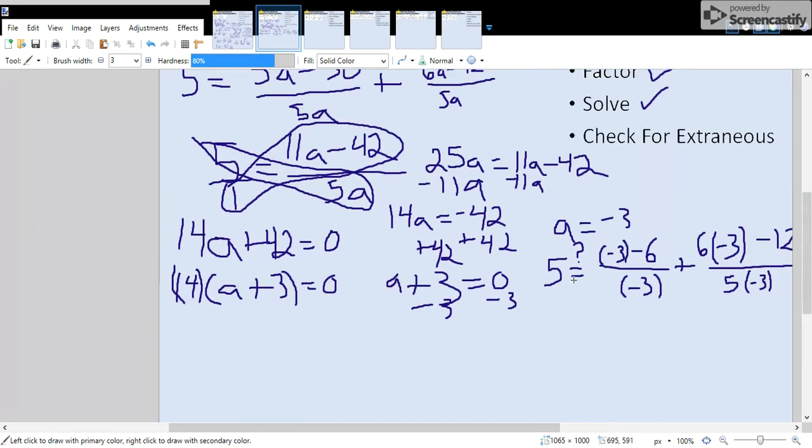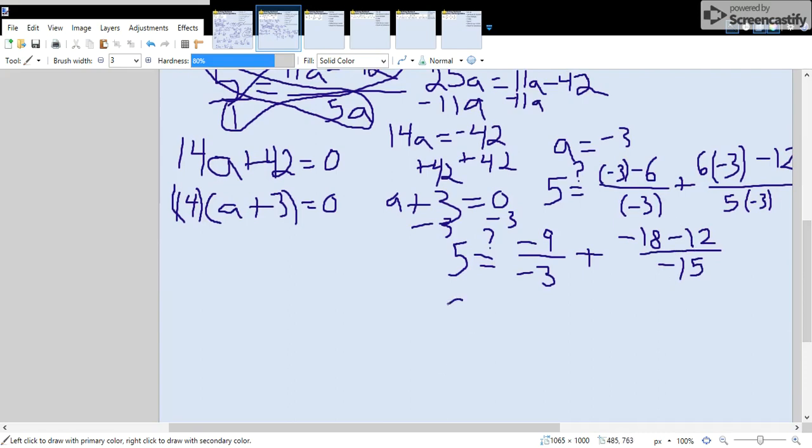We have is 5 equal to negative 3 minus 6 all over negative 3, plus 6 times negative 3 minus 12 all over 5 times negative 3. So if you multiply all that out, you should get is 5 equal to negative 9 divided by negative 3, plus negative 18 minus 12 all over negative 15. If you combine like terms,